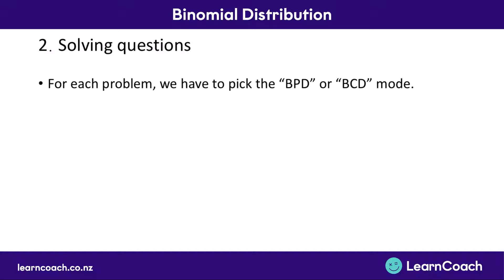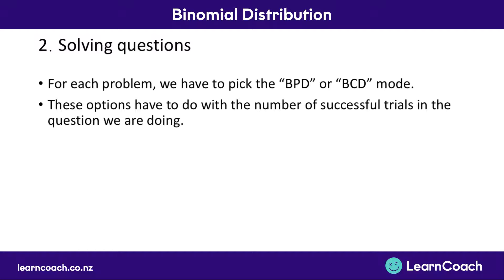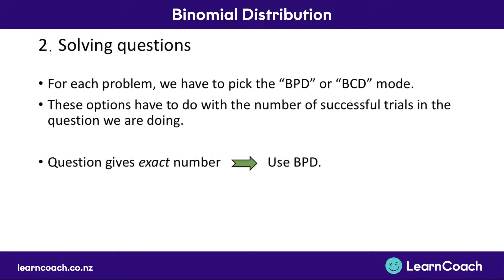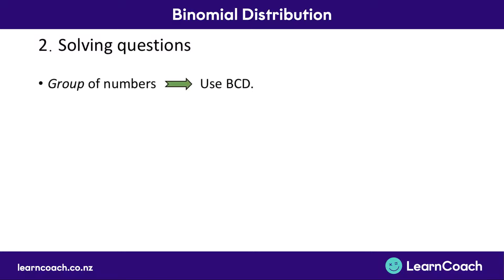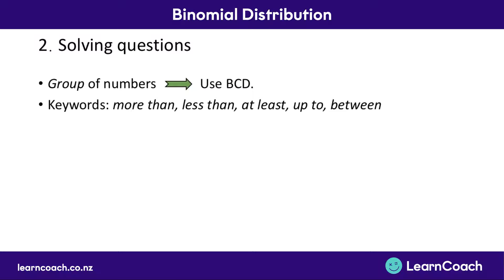For each problem we do with binomial distribution, we have to pick BPD or BCD mode. These different options have to do with the number of successful trials stated in the question. If the question gives an exact number, we use BPD mode — for example, finding the probability of getting exactly 10 heads in 15 coin flips. If we get a group of numbers rather than exactly one, we use BCD mode. The keywords to look for when using BCD are: more than, less than, at least, up to, or between.